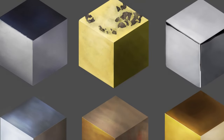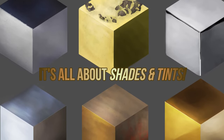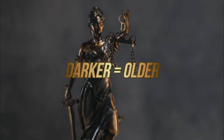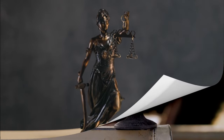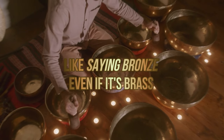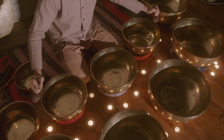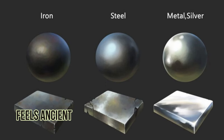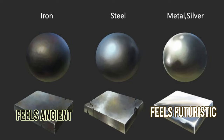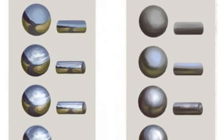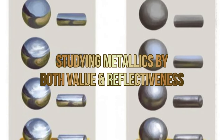The darker the metallic, the older the material seemed in design language — darker material evoked older terminology, like using 'bronze' for a more brass-like item. This led to a direct parallel between shade and time: the deeper the shade, the more ancient the feeling; the lighter the tint, the more technologically advanced or futuristic the item. As such, metallics will contain two groups — a steel category and a gold/brass/bronze category — each functioning as a scale rather than distinct separate colors.